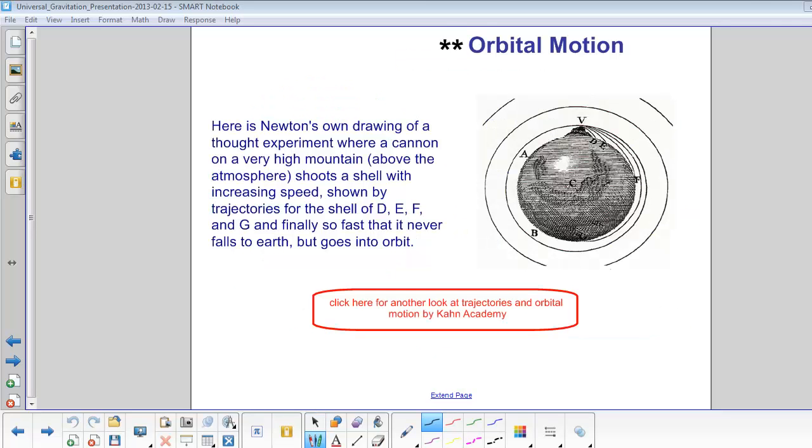Long before anyone had the means of putting something into orbit, Newton did a thought experiment where a cannon was on a very high mountain. When the cannon shoots a cannonball, maybe first it will land here at D. If it's a little faster, it would go here to E.